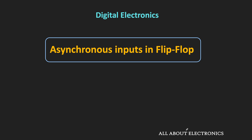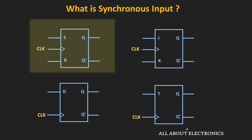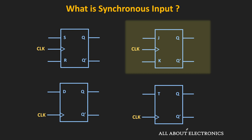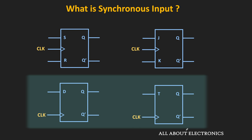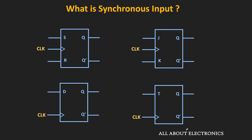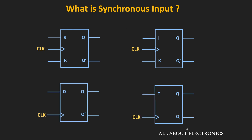So far during our discussion of the flip-flop, we have only talked about the synchronous inputs. For example, the SR input in the SR flip-flop or the JK inputs in the JK flip-flop are synchronous inputs. Similarly, the D and T inputs of the D and T flip-flop are also synchronous inputs. They are called synchronous inputs because these inputs can change the output state of the flip-flop only at the clock transition. For example, if the flip-flop is positive edge triggered, then these inputs can change the output only at the rising edge of the clock. When the clock signal is low, these inputs cannot affect the output.